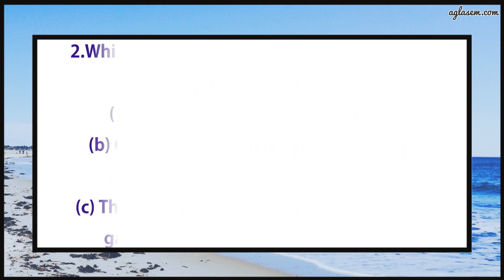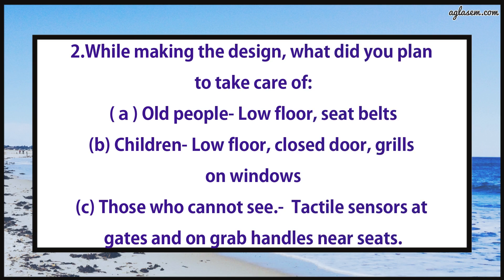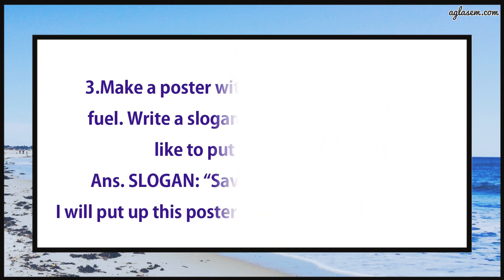Question number two says: While making the design, what did you plan to take care of? First, old people — answer: low floor and seat belts. Second, children — answer: low floor, closed door, grill on windows. Third, those who cannot see — answer: tactile sensors at gates and on grab handles near seats.